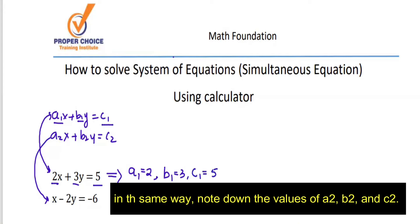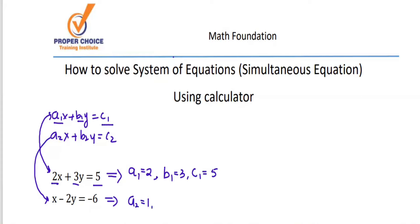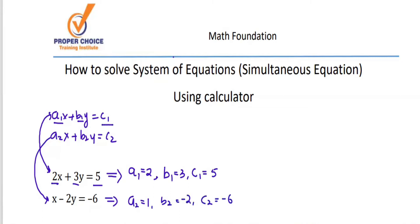In the same way, note down the values of A2, B2, and C2 from the second equation. A2 = 1, since nothing is written in front of X, the coefficient is 1. B2 = −2. C2 = −6.